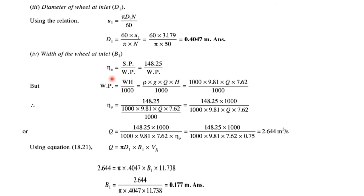Width of the wheel at inlet: Overall efficiency is given by shaft power upon water power. Water power is ρgQH/1000. You can find the overall efficiency from this relation.